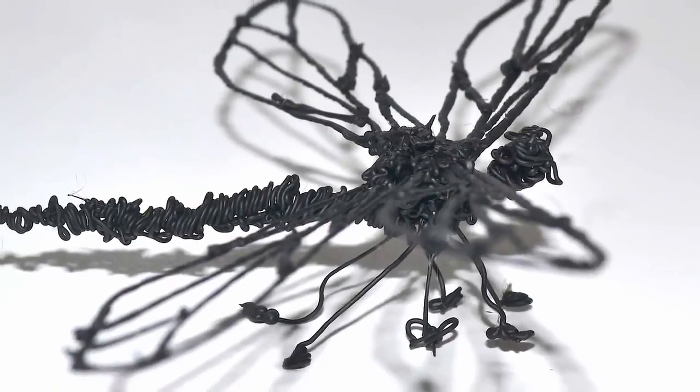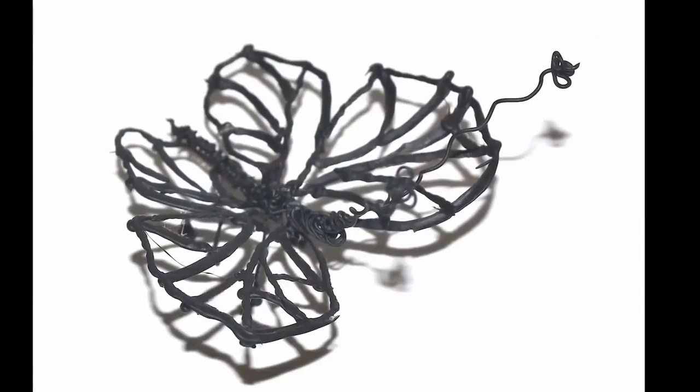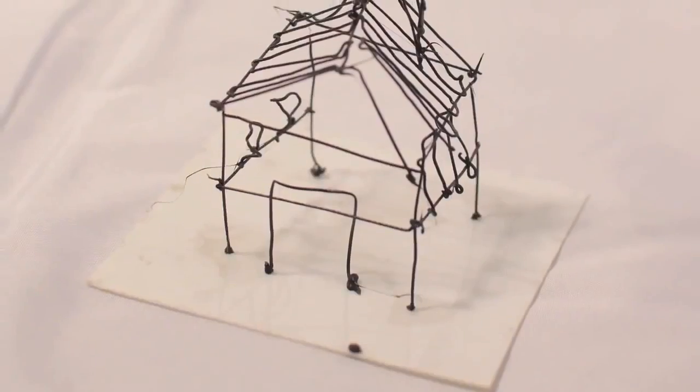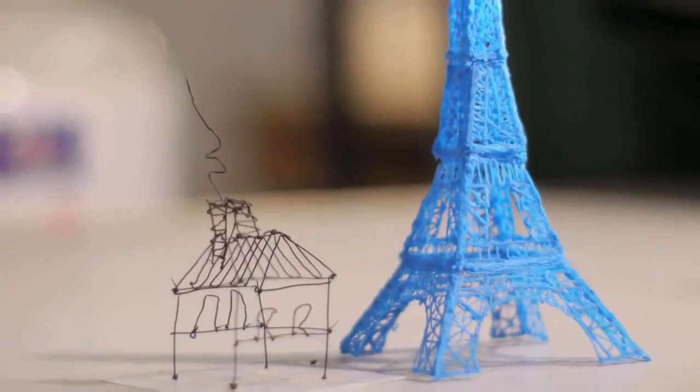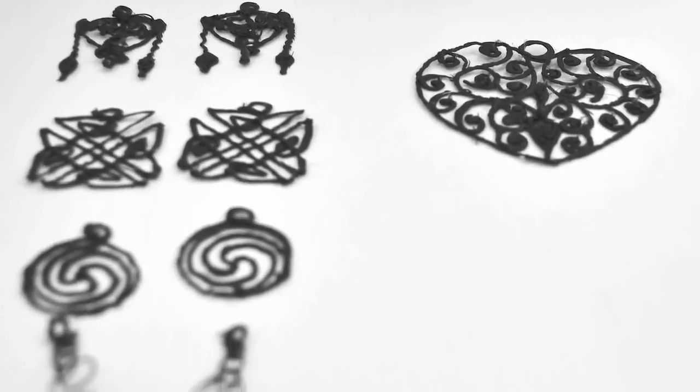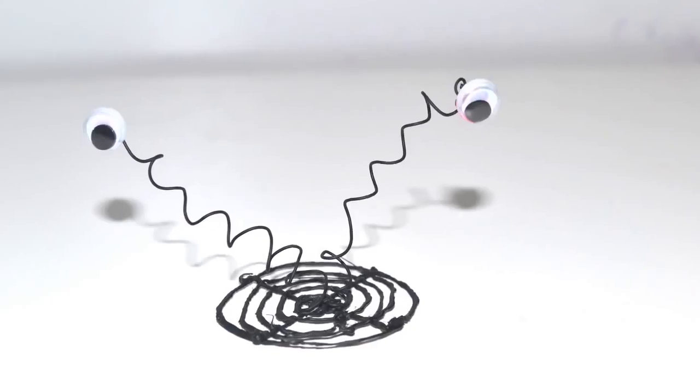So how does it work? 3Doodler uses cutting-edge, patent-pending technology to heat and cool plastic as it passes through the body of the pen. Just like a 3D printer, the plastic cools rapidly and becomes hard.